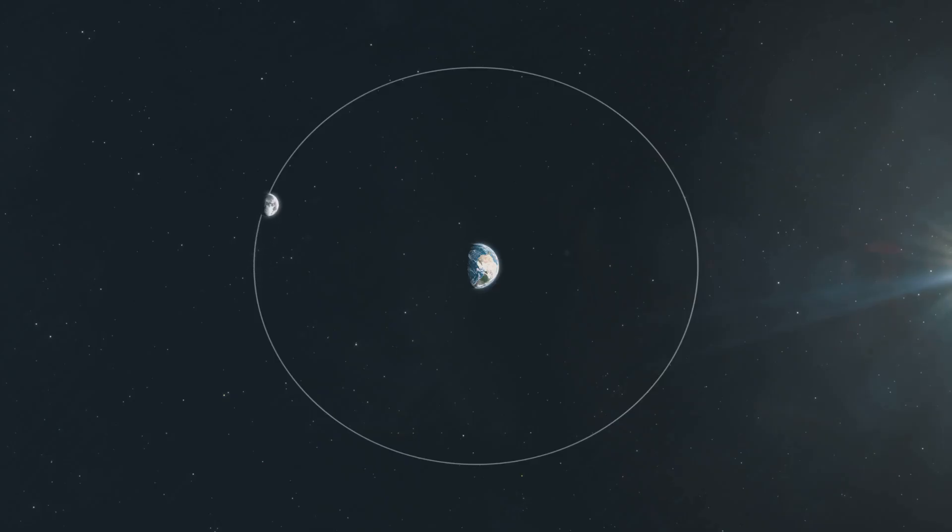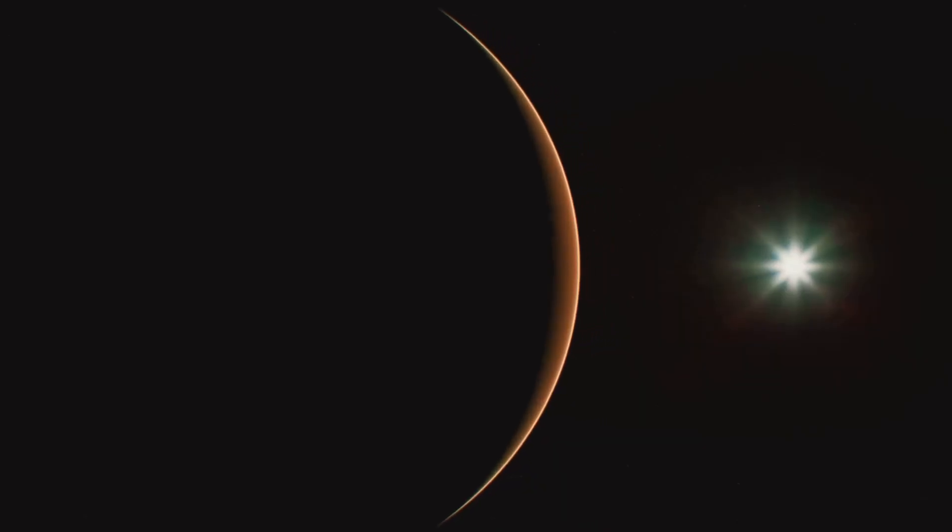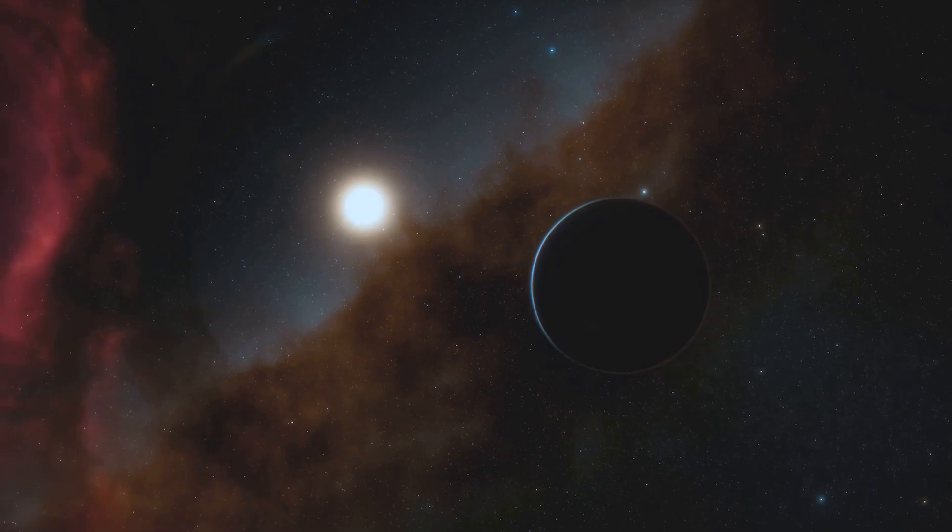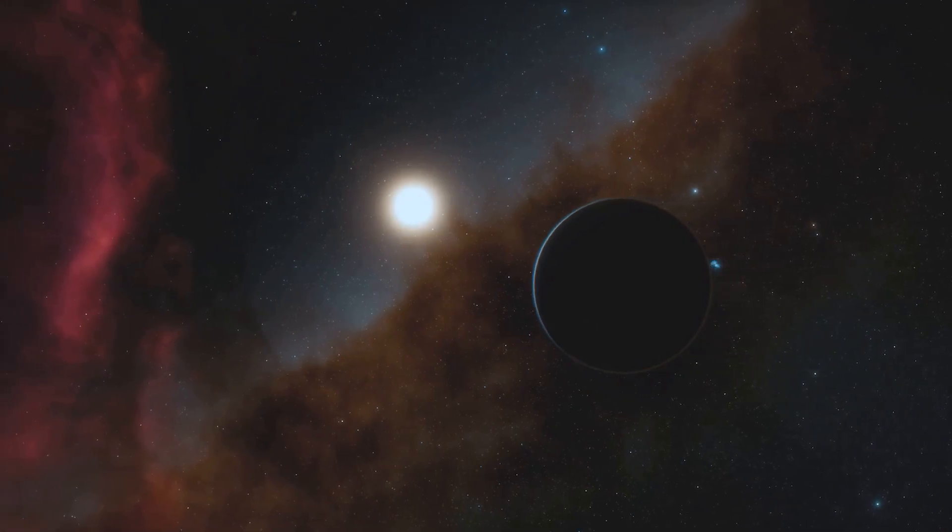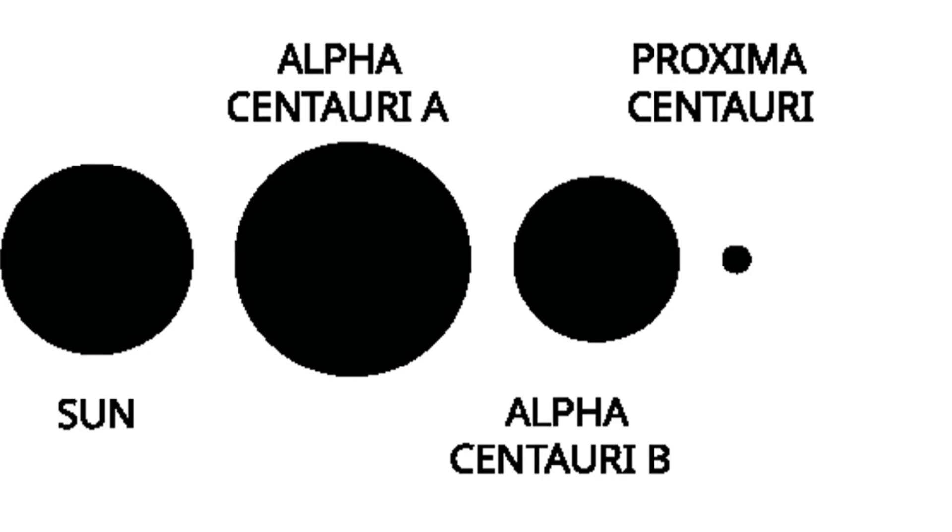The Moon is about 1 second away at light speed, Mars around 3 minutes, but Alpha Centauri over 4 years, even at the speed of light, and we can't travel anywhere near that fast, yet. So why choose it as our first destination?